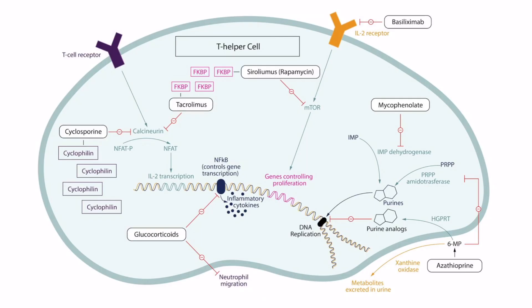Before we jump into the image mnemonic, it would be helpful to conceptually understand the mechanism of tacrolimus. This overview figure shows the various immunosuppressive drug targets within a T helper cell. Tacrolimus binds to the protein FKBP, also known as FK506 binding protein. From here, tacrolimus and FKBP inhibit calcineurin, similar to cyclosporine. Ultimately, IL-2 transcription is inhibited, which decreases T cell growth and therefore decreases the immune system's ability to fight off infection. This also prevents organ transplant rejection and can help mitigate the effects of autoimmune diseases.